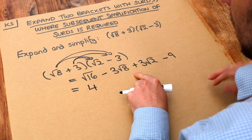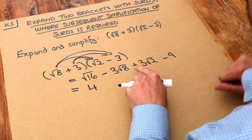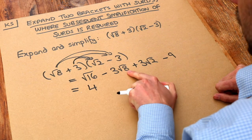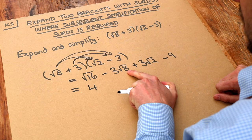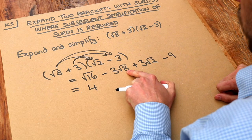The 3 root 8, well to check whether surds can simplify we always see if there's a square factor other than one that goes into it. Can we think of a square number that goes into 8? Well yes there is. 4 goes into 8.